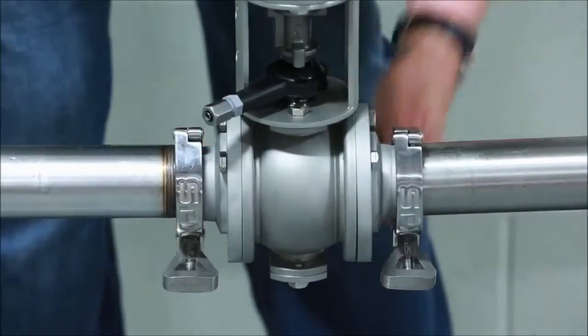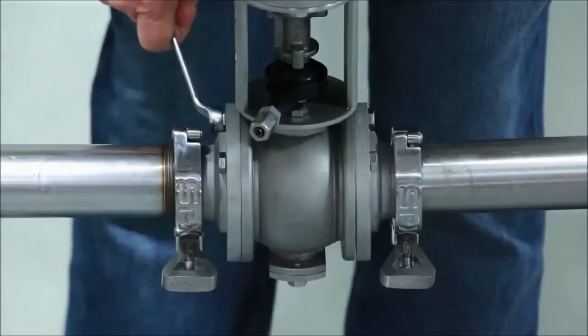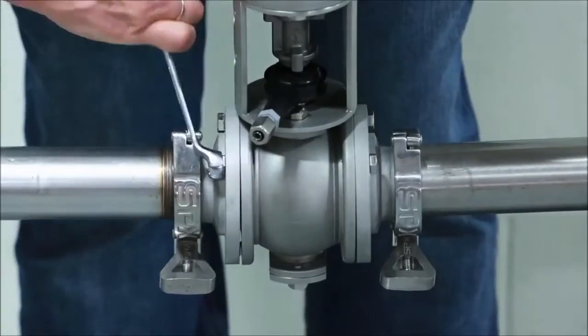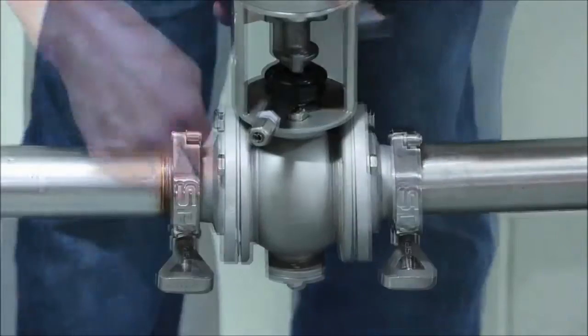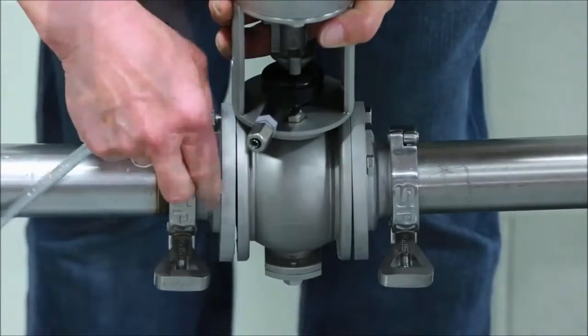To remove the valve, use a 13mm box end wrench to loosen and remove the bolts from the connection flanges. Support should be provided so that the valve does not fall and become damaged as the bolts are removed.